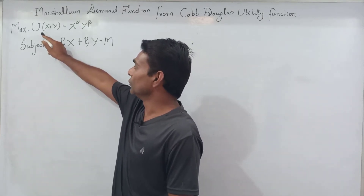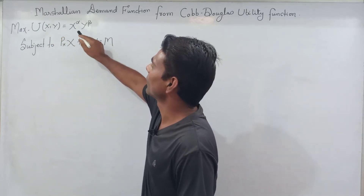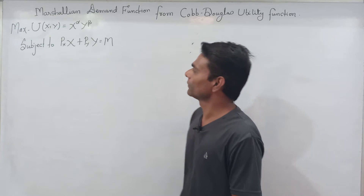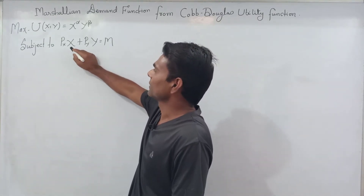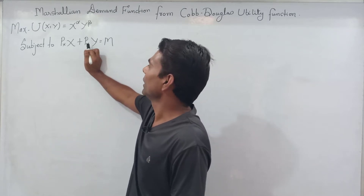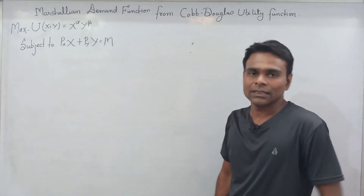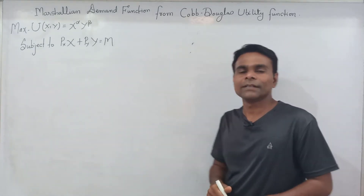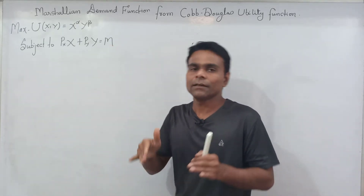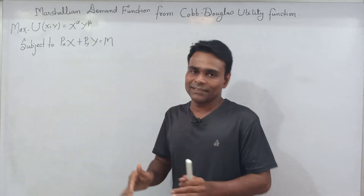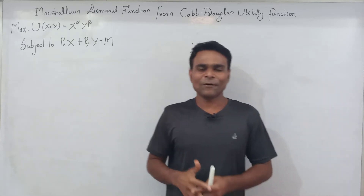We maximize utility U, which is a function of x and y, equal to x to the power alpha times y to the power beta, subject to the budget constraint: price of x times x plus price of y times y equals m. Here, Px and Py are prices of commodities x and y respectively, m is the consumer's income, and x and y are quantities of goods.